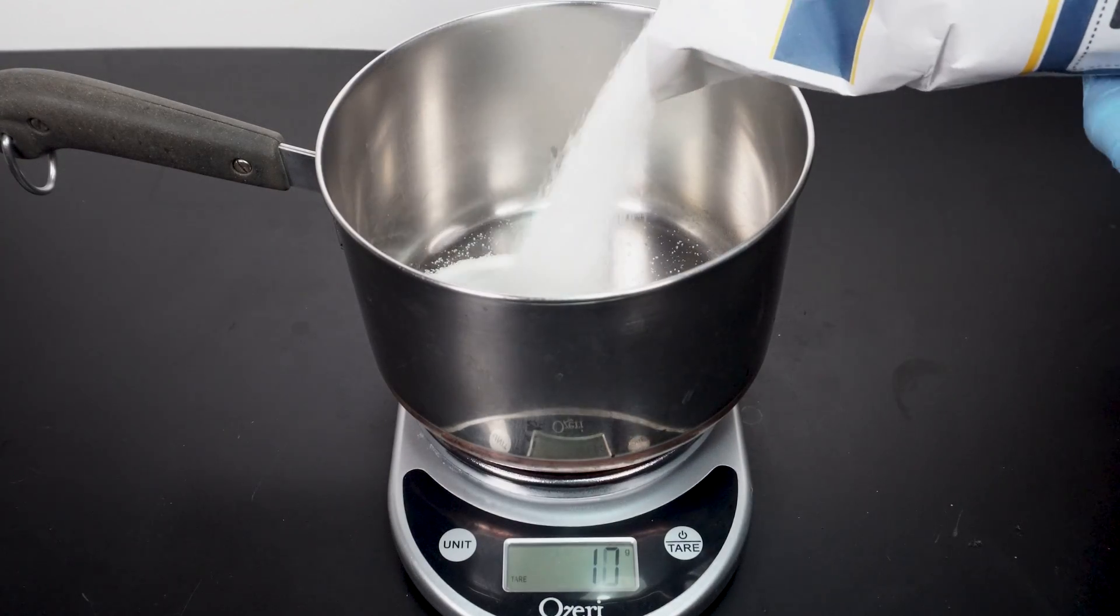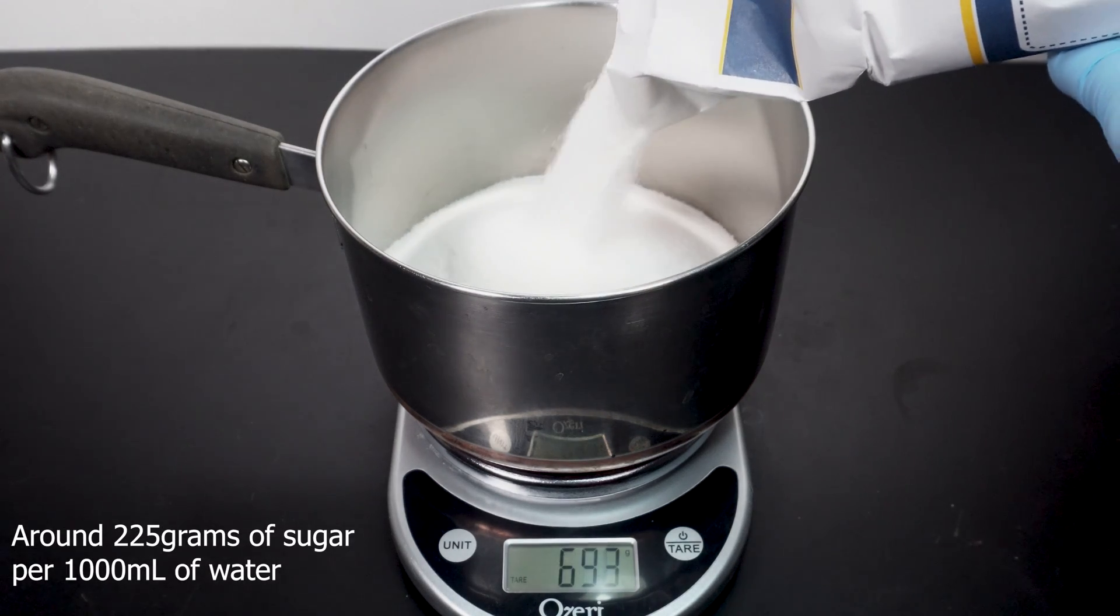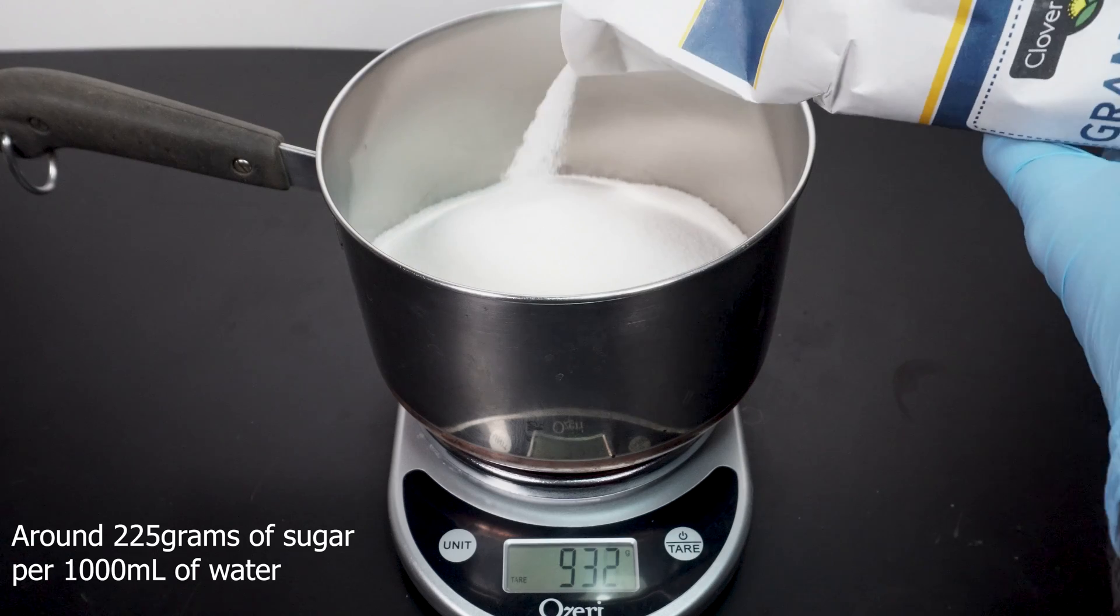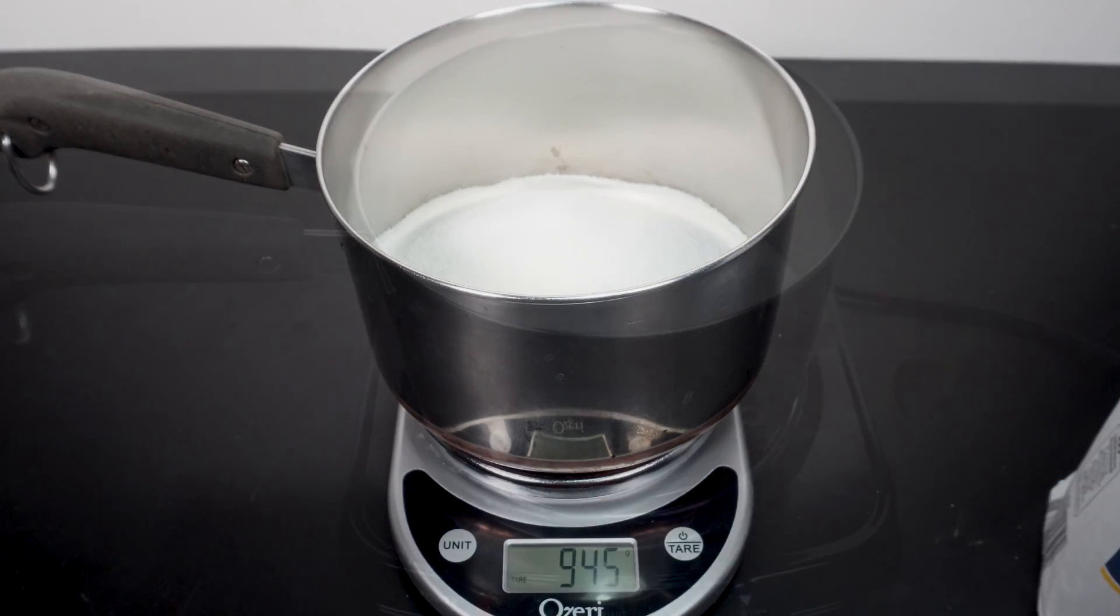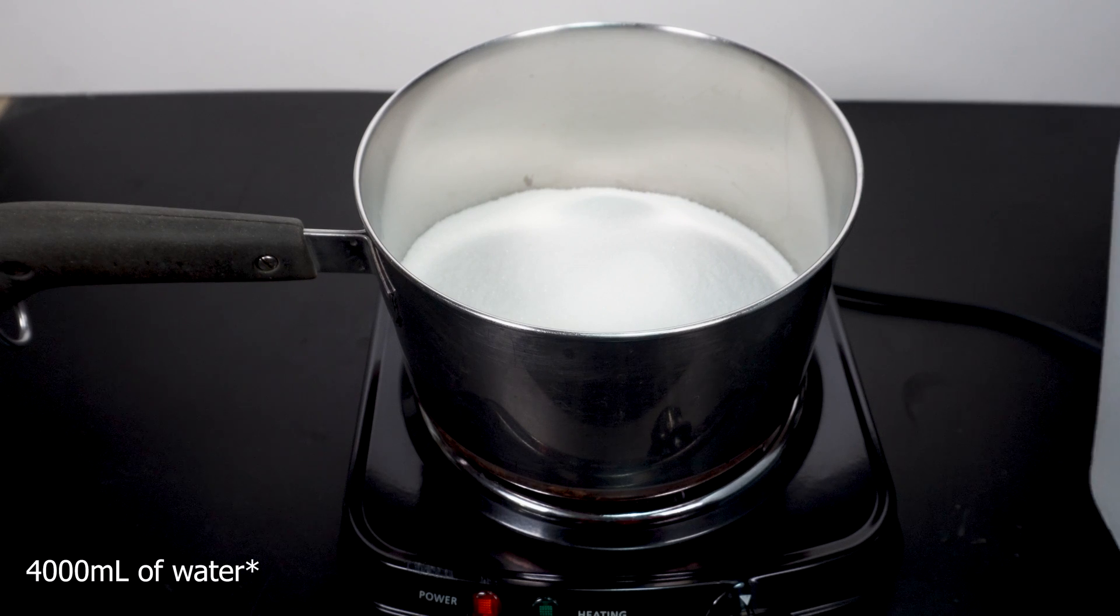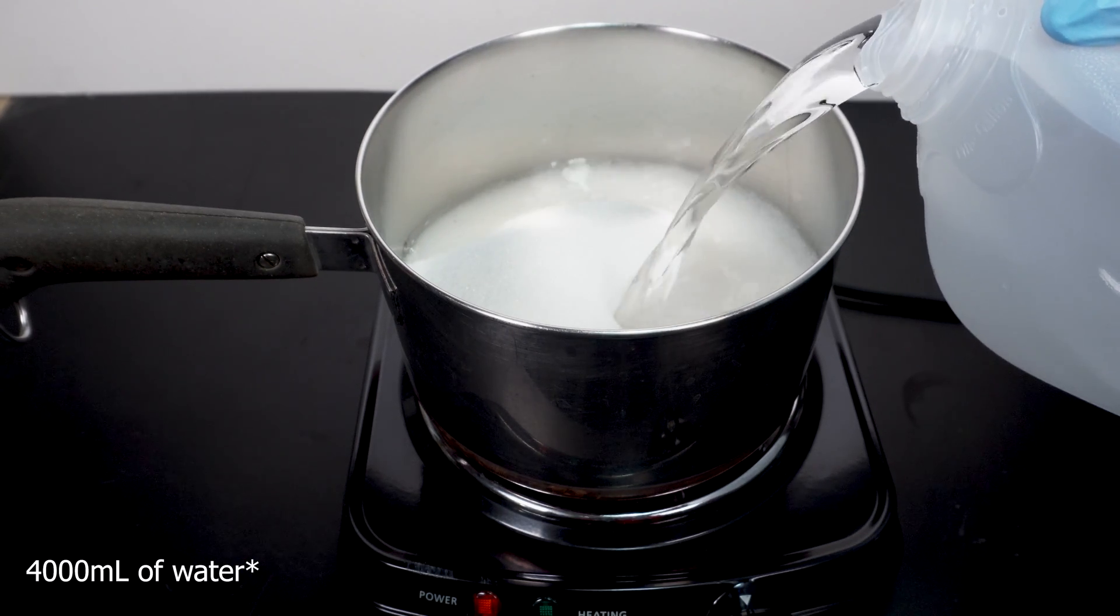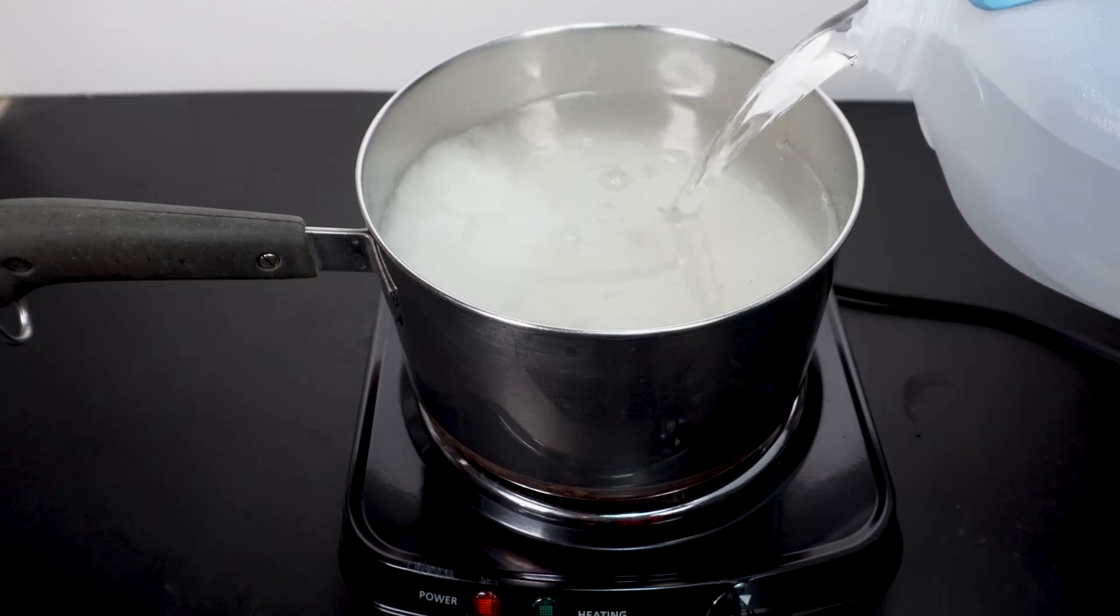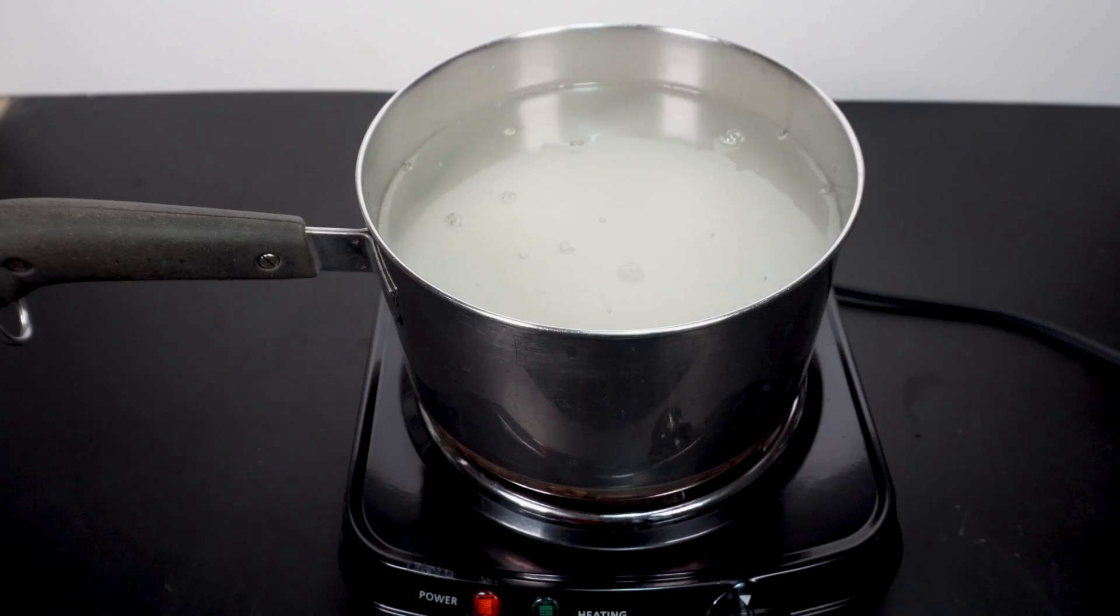We will start by adding sugar into a pan. For every liter or about quarter gallon, we will add in half a pound of sugar. In total, I use 945 grams of sugar for the total volume of 4 liters of water. Once everything is weighed out, I put my pot of sugar on an electric burner. Before turning it on, I add in just about a half of the total water that is needed.